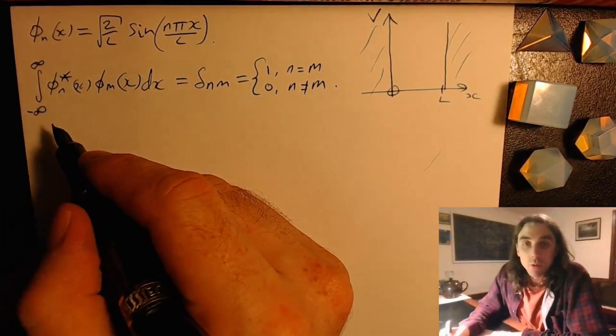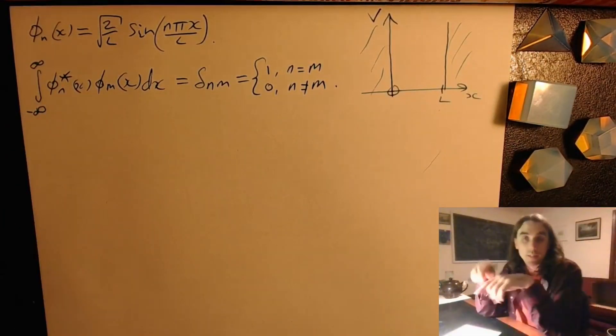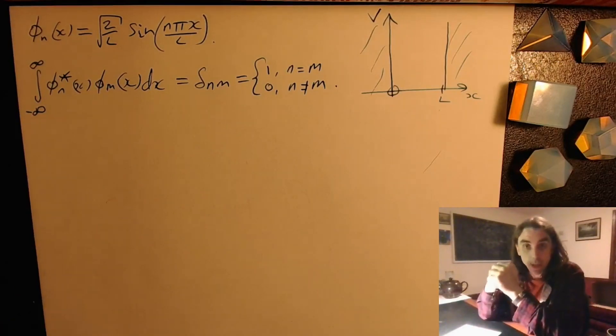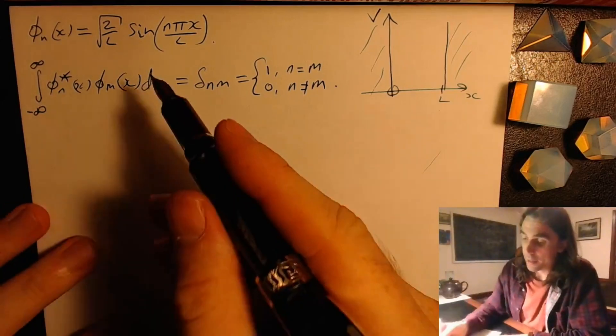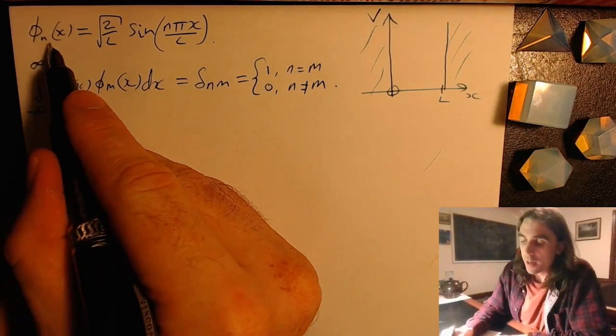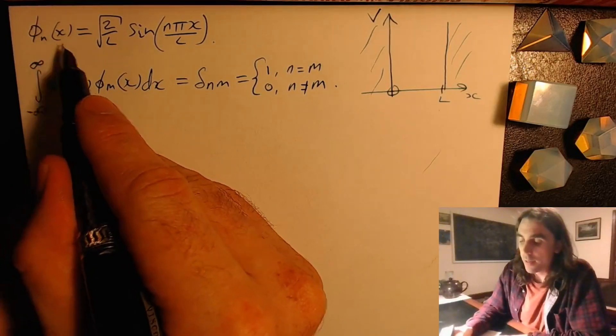Orthogonal, of course, implies something that there's some similarity to two vectors being at 90 degrees, and we'll see when we study matrix mechanics that there's actually a very close analogy to that idea. So to show this for the eigenstates of the infinite well,